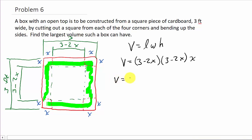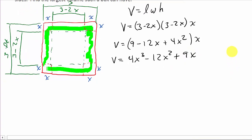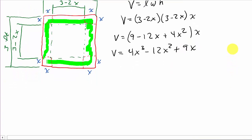So the volume, that's going to be 9 minus, let's see, is that 12x? 12x plus 4x squared, and then I'll distribute the x here. So that's going to give me 4x cubed minus 12x squared plus 9x. So we want to maximize this volume here.